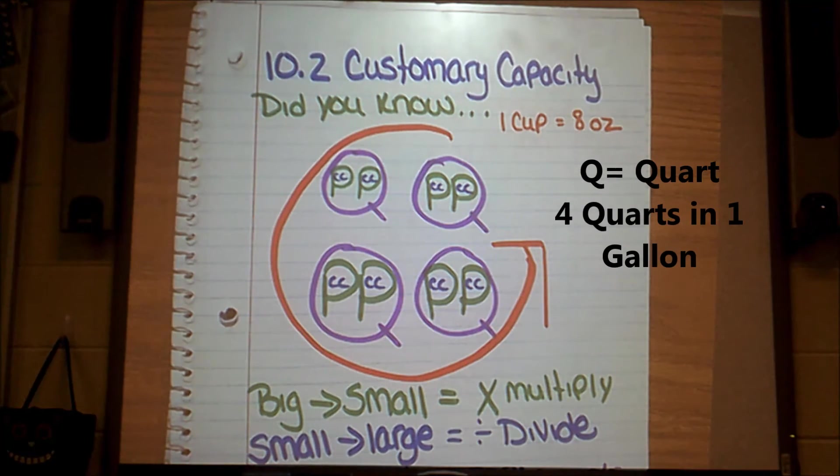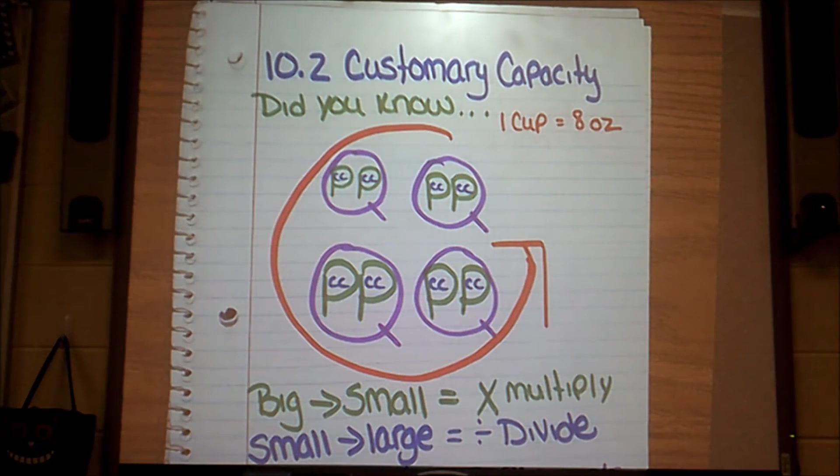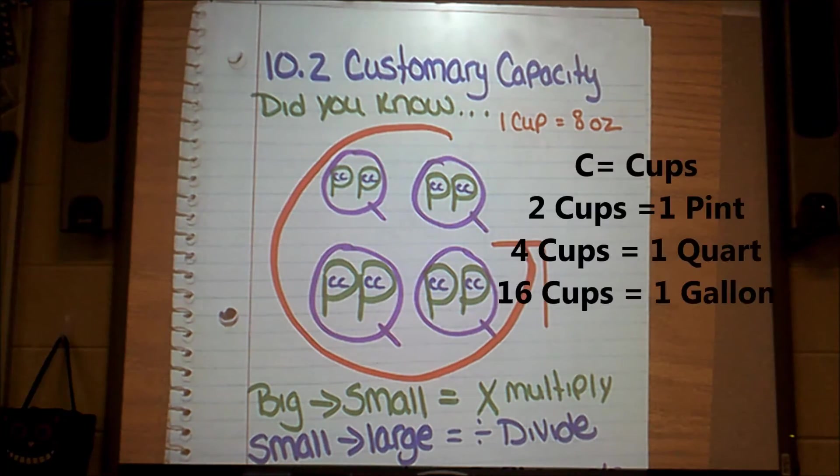And then just like you see in mine, I want you to put two P's in each of your Q's. Those P's, they stand for pints. So what this says is that I have two pints in each quart. Inside each of those P's, and it might be hard to see, but there are actually two C's in each P. So go ahead and add that to your notes.